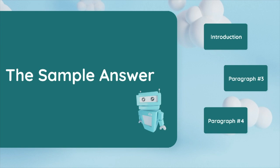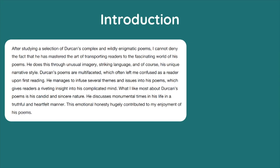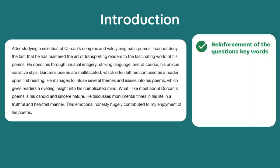Let's take a look at this student's introduction. Straight away I noticed that the student reinforced the question's key words and phrases within their intro. Recycling phrases such as 'narrative style' and 'emotional honesty' along with words such as 'issues' helps keep your essay on task and shows the corrector you're addressing all aspects of the question. I also like how this student wastes no time getting into the narrative aspect — outlining how Durkin harnesses unusual imagery and striking language to support his narrative approach in exploring a variety of issues.